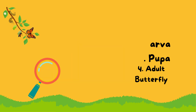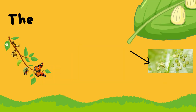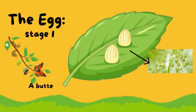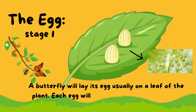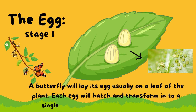Stage 1: the egg. A butterfly will lay its eggs usually on a leaf of a plant. Each egg will hatch and transform into a single butterfly. Butterfly eggs are small like poppy and sesame seeds, and could be oval or round in shape.